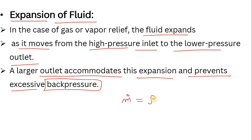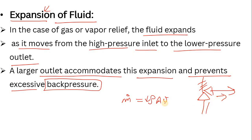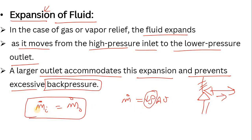Now, looking at the continuity equation: mass flow rate equals density times area times velocity. As I said, when the fluid expands, the density is reduced. If the system becomes over-pressurized, the fluid relieves from inlet to outlet. Mass is conserved — the mass flow rate at inlet equals the mass flow rate at outlet. As density decreases, velocity increases, so to accommodate this, the area must be increased.